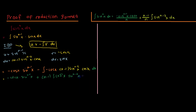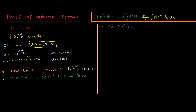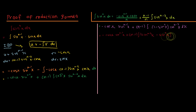Now we apply the trig identity sine squared x plus cos squared x equals 1. Replacing cos squared x with 1 minus sine squared x, we get negative cos x multiplied by sine to the power of n minus 1 of x, plus n minus 1 multiplied by the integral of 1 minus sine squared x times sine of x to the power of n minus 2 dx. Multiplying inside the brackets gives sine of x to the power of n minus 2 minus sine of x to the power of n.